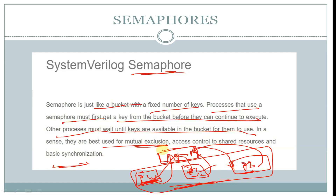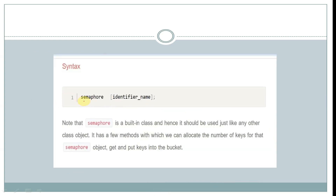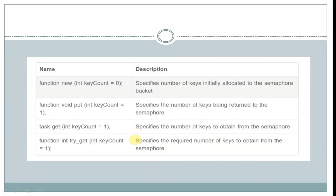So semaphores are best used for mutual exclusion, access control to shared resources, and synchronization. The syntax for a semaphore is the keyword semaphore followed by an identifier name. Semaphore is a built-in class and should be used just like any other class object. It has a few methods to allocate the number of keys, and to get and put keys into the bucket.